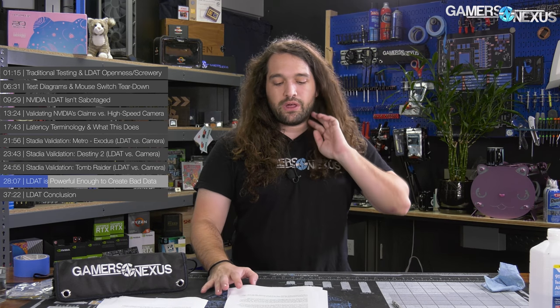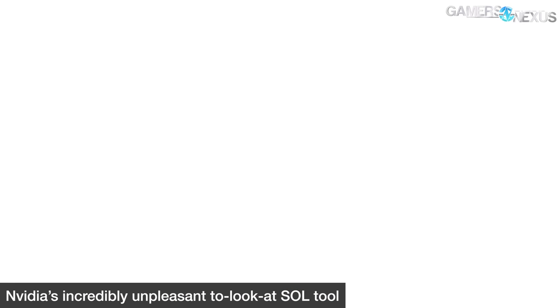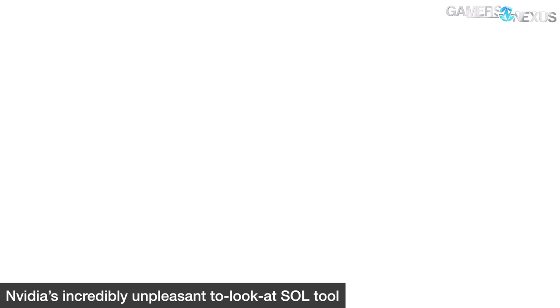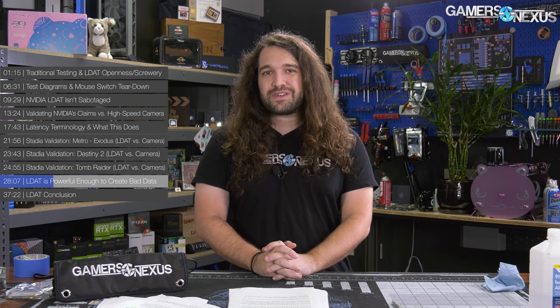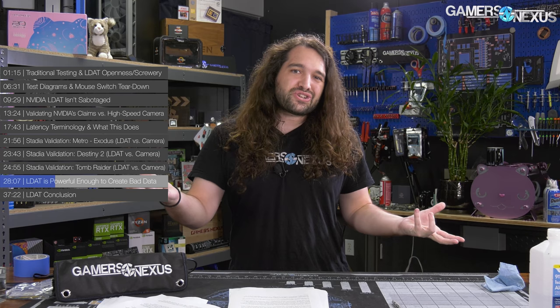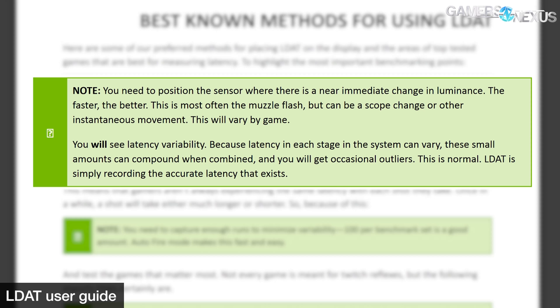SOL is an extremely lightweight DX11 application — when the mouse is clicked, it flashes a color. Latency times registered with SOL were about 18 milliseconds on average, significantly lower than with Microsoft Paint. LDAT is 100% capable of producing bad data if used incorrectly. This is actually a good thing because you want a device that enables you to create all kinds of data — the device shouldn't really care whether the data is good or bad. The easiest mistake to make is one NVIDIA does note in its usage guide: you need to position the sensor where there is a near-immediate change in luminance.